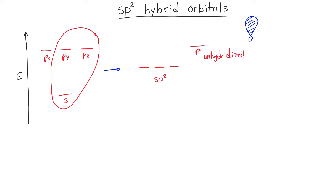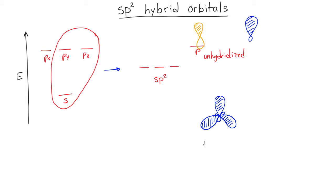We also have a remaining p orbital that is unhybridized. The p orbital that is unhybridized has the same dumbbell shape as a classic p orbital. The hybridized sp2 hybrid orbitals are going to want to form a trio of orbitals that are as far away from each other as possible. In order to do this, the best possible arrangement is to form 120-degree angles. These are the orbitals that are used when molecules form that have 120-degree bond angles, corresponding to trigonal planar geometry.